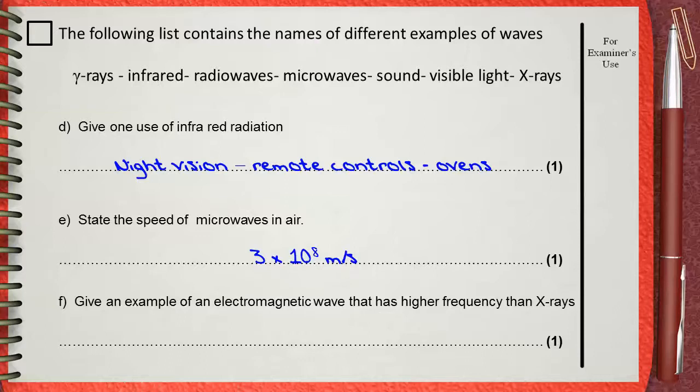Question F. He wants an example of what is higher frequency than X-rays. Of course, gamma rays are higher frequency than X-rays. In this question, it's clear that you want to understand the order of electromagnetic waves in electromagnetic spectrum according to the increase or decrease in frequency and wavelength. This is a simple and direct question. Each point for one mark, not more.